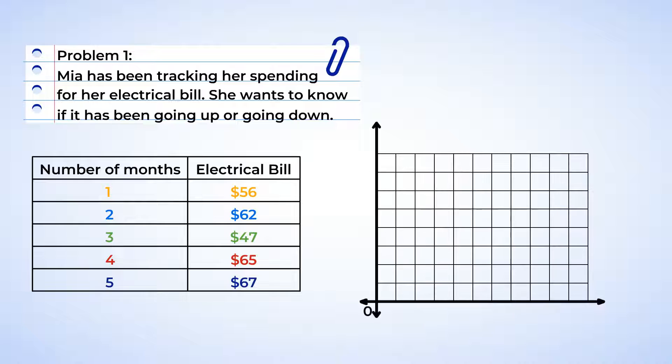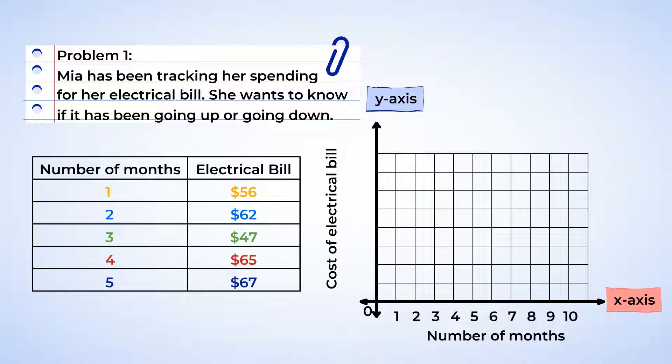When we create our graph, we need to make sure to label the axes. The bottom, or x-axis, will be labeled with the number of months, and the vertical, or y-axis, will be labeled with the cost of the electrical bill in dollars. And we're going to use increments of 10 so that the graph isn't too big.